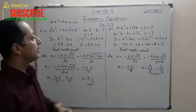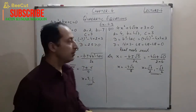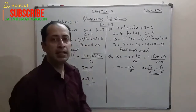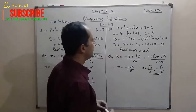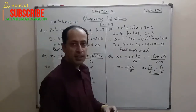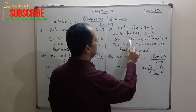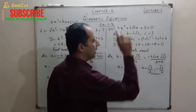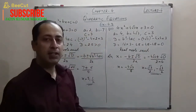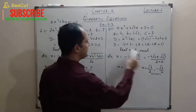Now the third part of question 2: 4x² + 4√3·x + 3 = 0. Comparing with the standard form: a = 4, b = 4√3, c = 3. Finding the discriminant: D = (4√3)² − 4×4×3. On solving, D = 0. Since D = 0, the roots are real but equal.